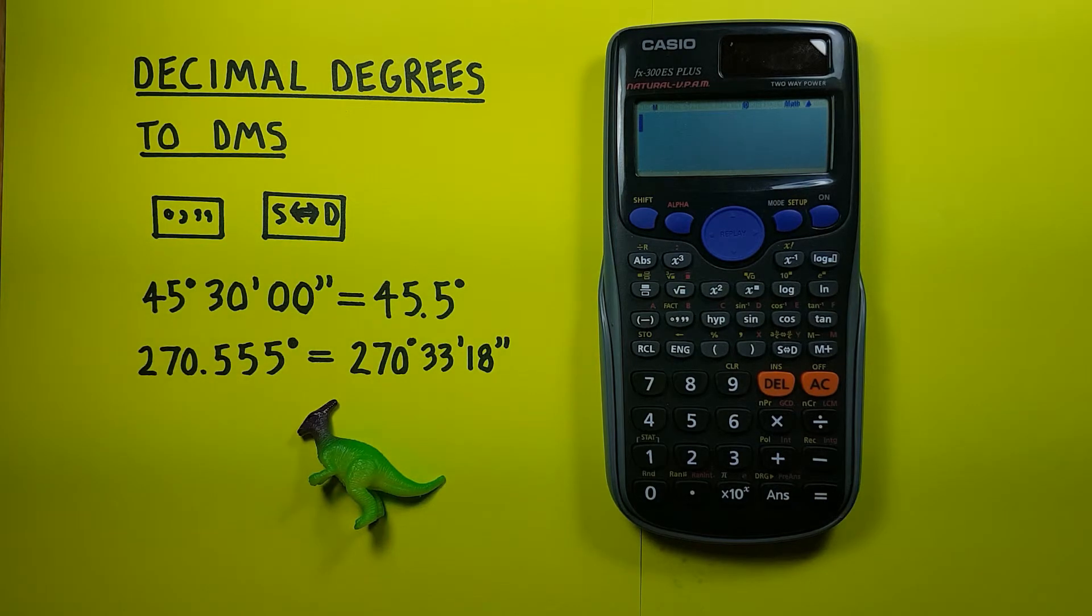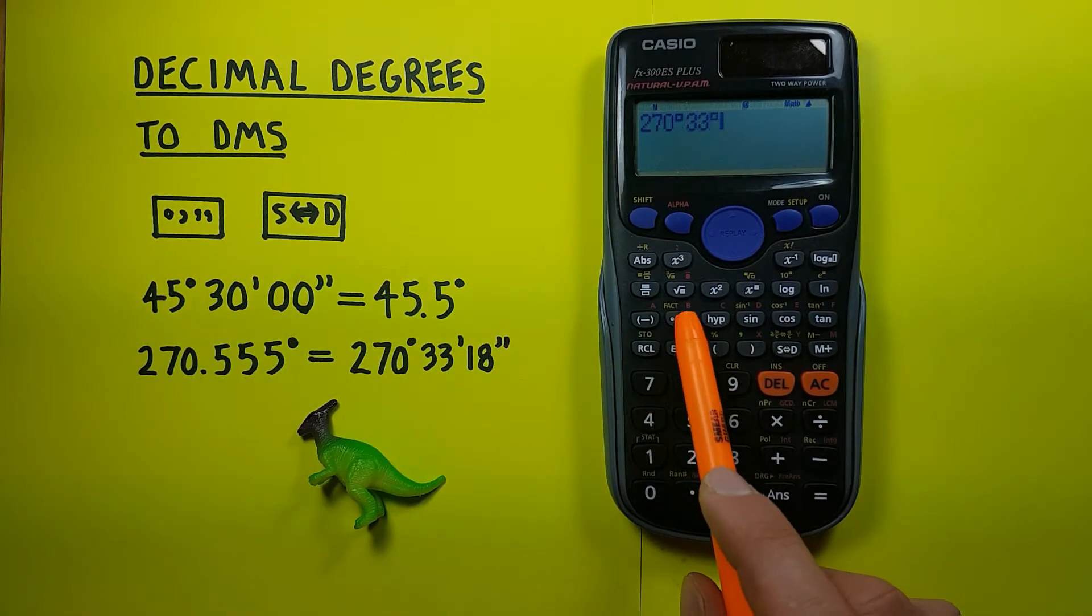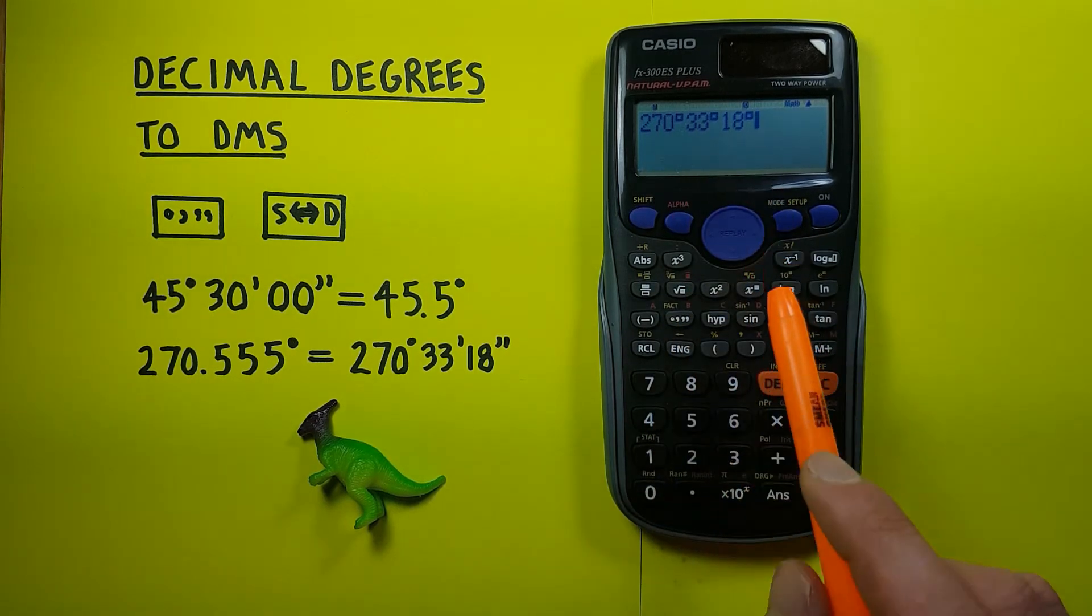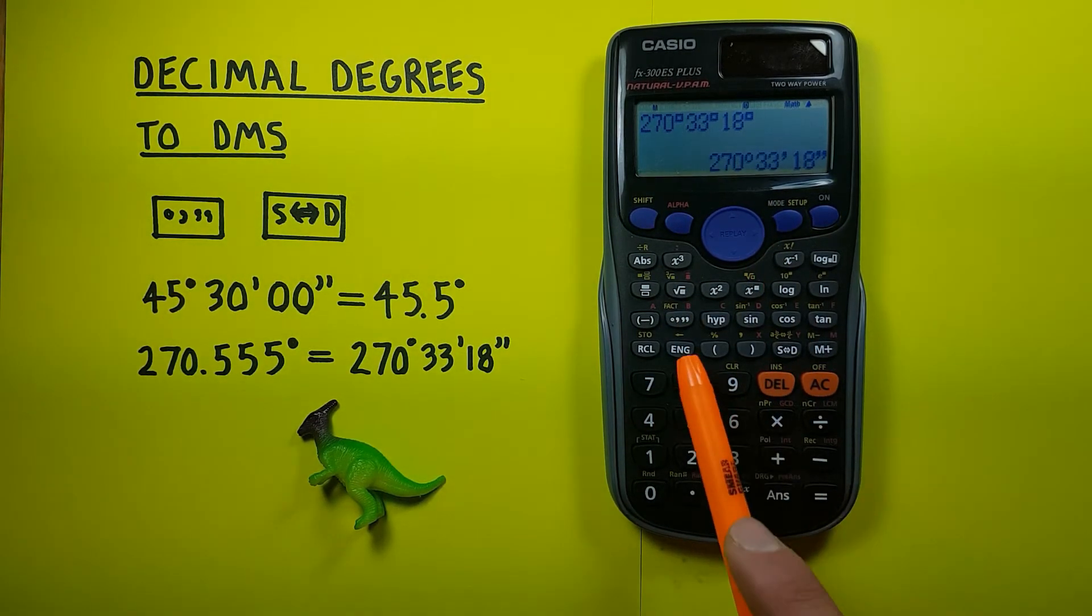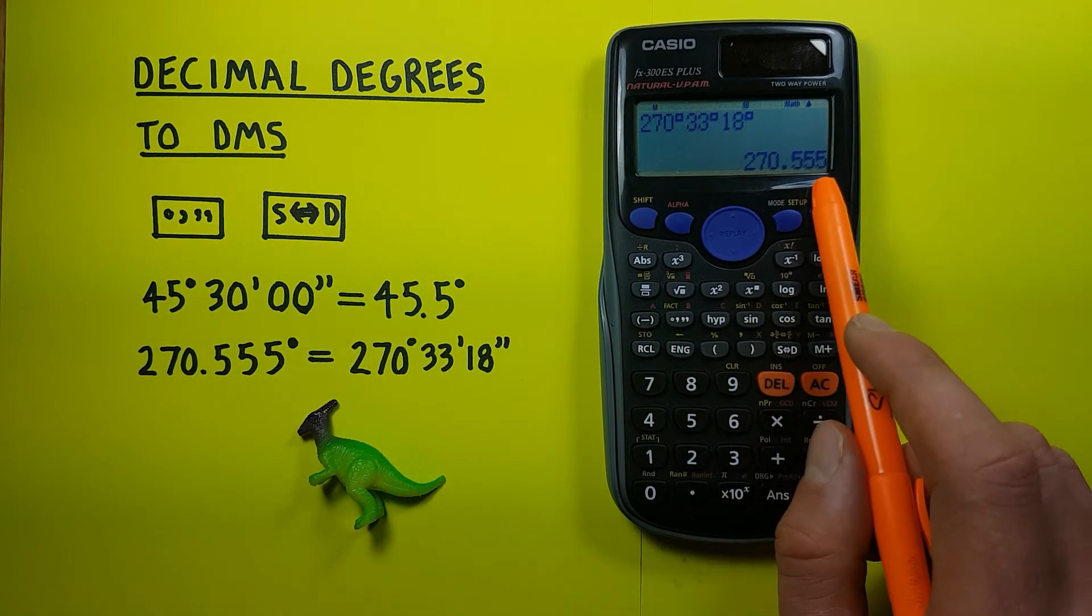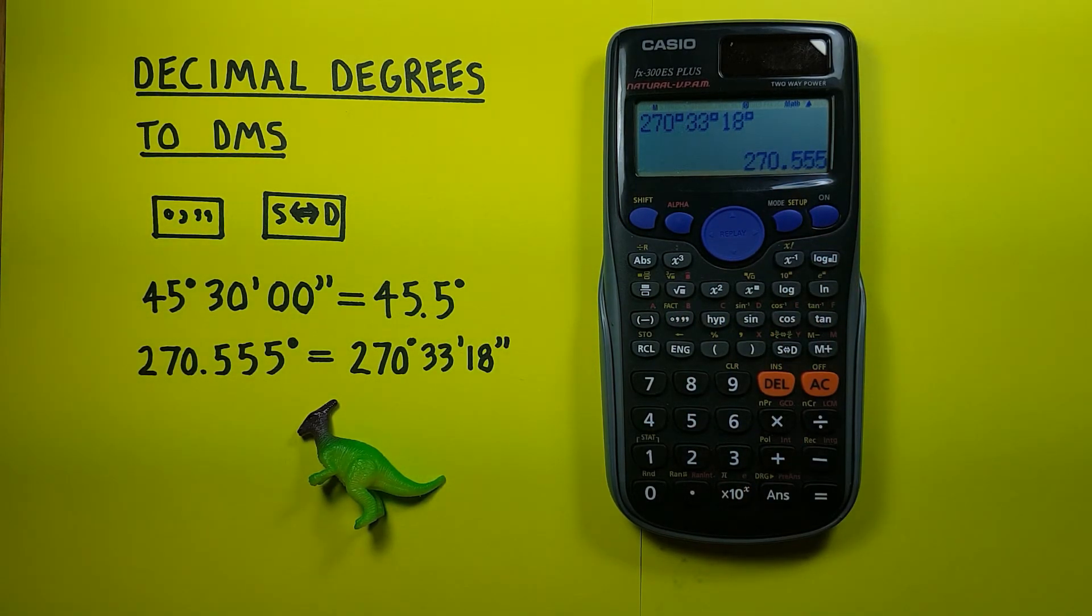We can test this out one more time by placing the degrees on the top as well as the minutes and seconds. There we go. Pressing equals. And then pressing the degrees, minutes, seconds key again. And you can see we've converted back to decimal degrees. So we know that works.